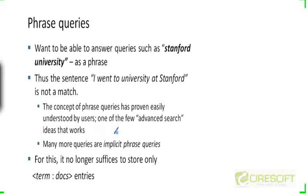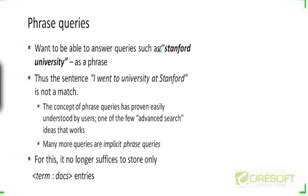Many more queries are implicit phrase queries, where people actually don't include the inverted commas around their search terms, but they actually mean a phrase query. So in order to handle phrase queries, it's clearly not adequate to work with the index we've built so far, because we are not recording the positions of terms, whereas here the positions are all important.